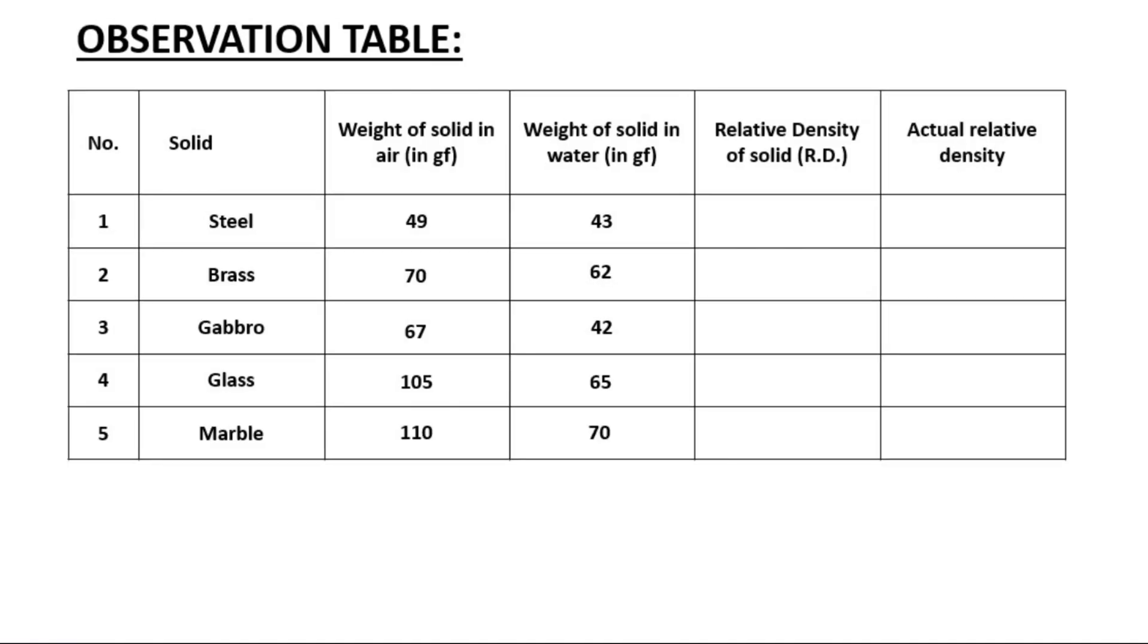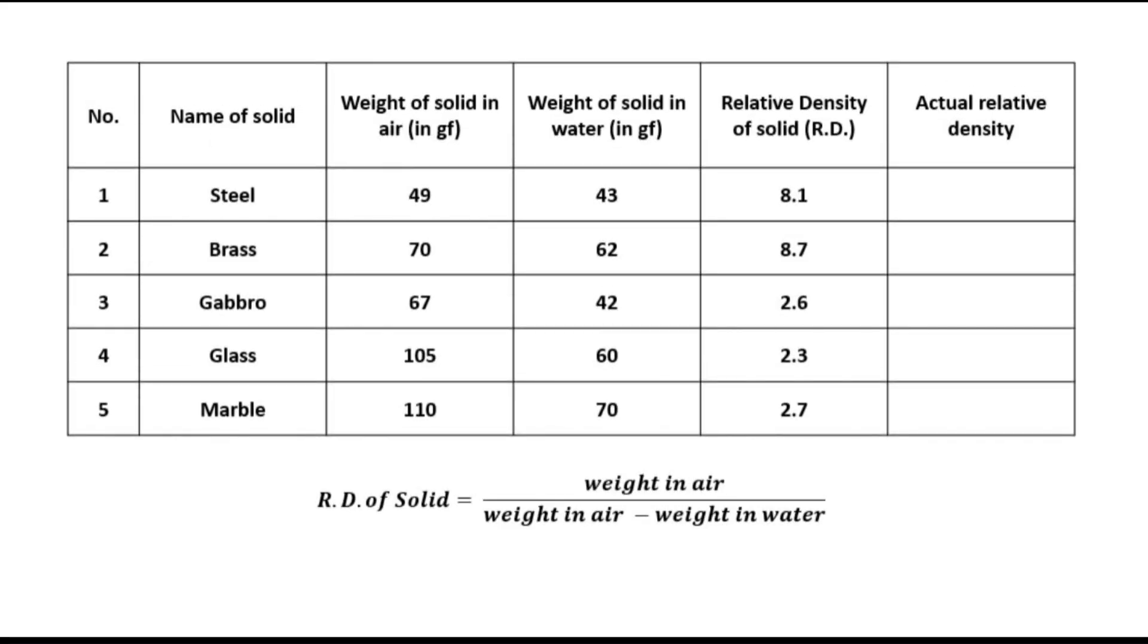So, now we have taken all the observations and let us calculate the relative density using the formula weight of solid in air upon weight of solid in air minus weight of solid in water. This formula is derived with the help of Archimedes principle. I have explained Archimedes principle and the derivation of this particular formula in separate videos. The links of both the videos are given in the description below.